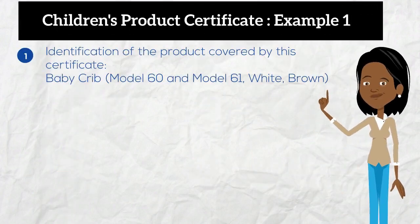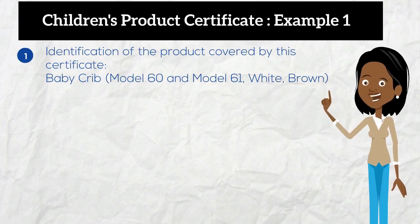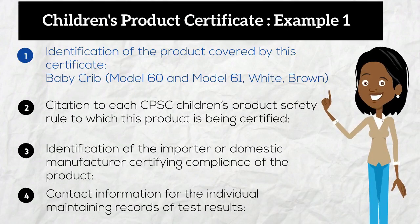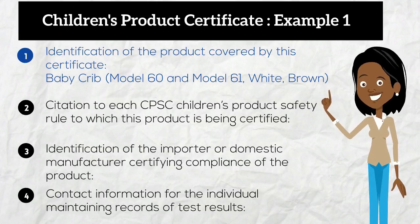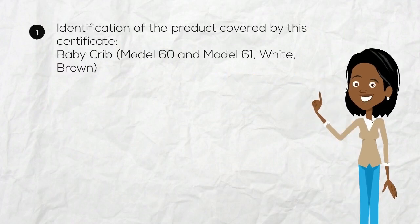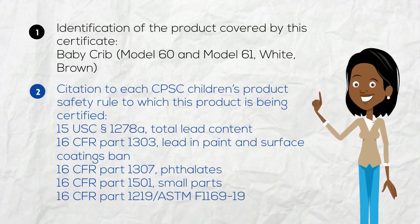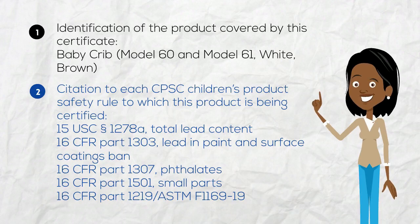For the first element, all I need to do is describe my product that's covered by the CPC. This description includes all the different models and colors that have been successfully tested. In the second element, I'll need to include the required children's product safety rules for cribs. If you're unsure of where to find citations for your product, I recommend using our regulatory robot tool. The link to the robot tool will be provided at the end of this video.